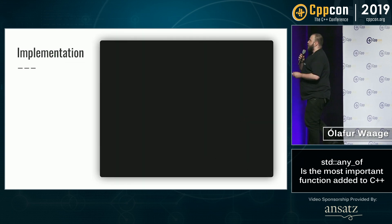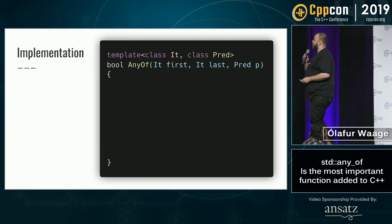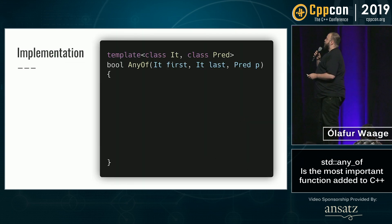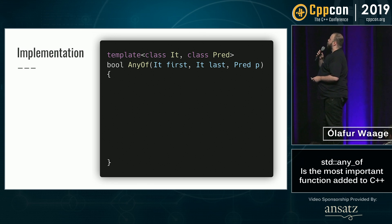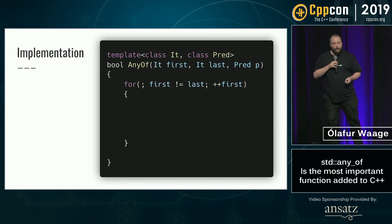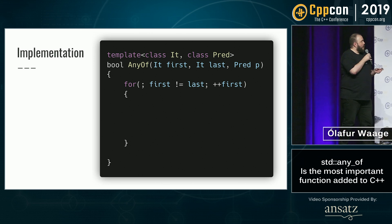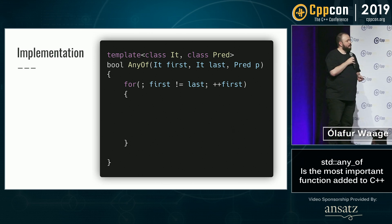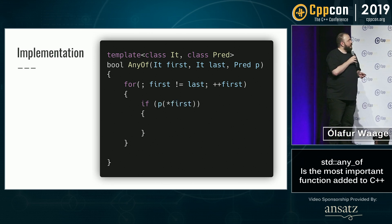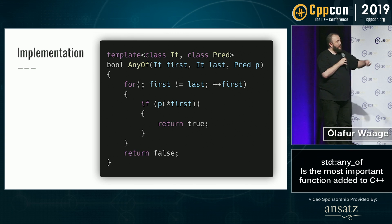We can also implement this ourselves. Have a little template — any_of — with two iterators and a predicate. Make a loop, ask a question about the element, and then return true or false.